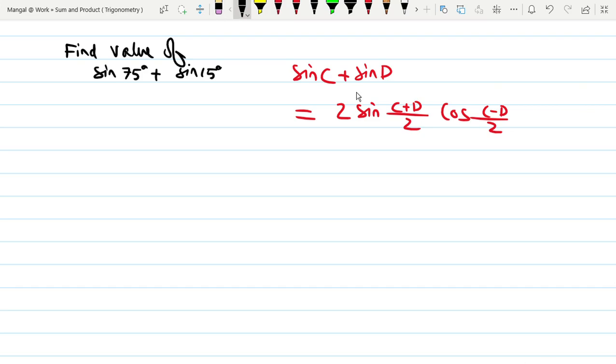C is 75, D is 15. So sin C plus sin D, when you have 2 sin cos, C plus D divided by 2, C minus D divided by 2. So you want to get 2 sin 90 by 2.